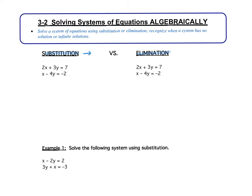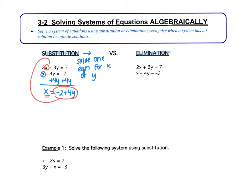The idea with substitution is that you are going to solve one of your equations for x or y, and then substitute into the other. In the bottom equation, I can very easily solve for x, so that's what I'm going to do. I'm going to add 4y to both sides, so I get x is equal to negative 2 plus 4y. Now the method name tells us what we need to do — substitution, so we need to substitute. We used the second equation; now we're going to go to the first equation.